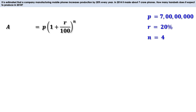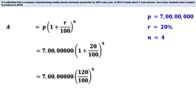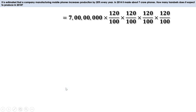We have our equation: A = P × (1 + R/100)^n. Here A is the number of mobile phones after 4 years, P is 7 crores, R is 20, and n is 4. Replacing, we get 7 crores × (1 + 20/100)^4. Now 1 + 20/100 is 120/100, so this can be written as 7 crores × (120/100)^4, which expands to 7 crores × (120/100) × (120/100) × (120/100) × (120/100).